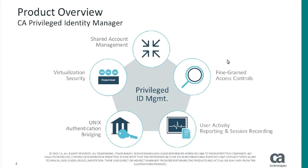CA Privileged Identity Manager offers a comprehensive solution to privileged identity management. Shared account management, or password vaulting, enables end users to automatically log in to target systems using privileged accounts without ever seeing the passwords. Fine-grained access controls provide segregation of duties or least privileged access to end users. User activity reporting and session recording enable compliance by monitoring all privileged activity sessions. Unix authentication bridging allows you to manage Unix passwords through Microsoft Active Directory rather than through distributed password files. And virtualization security provides all the capabilities of shared account management and extends to also secure the hypervisor.